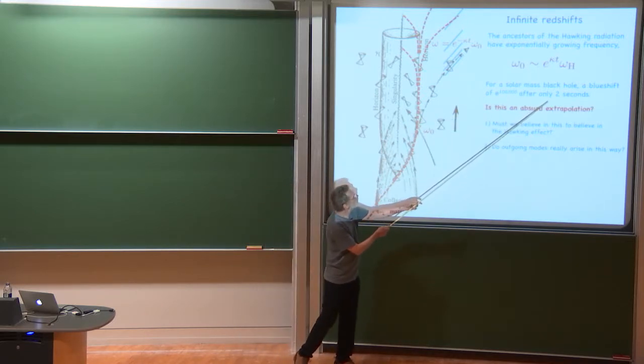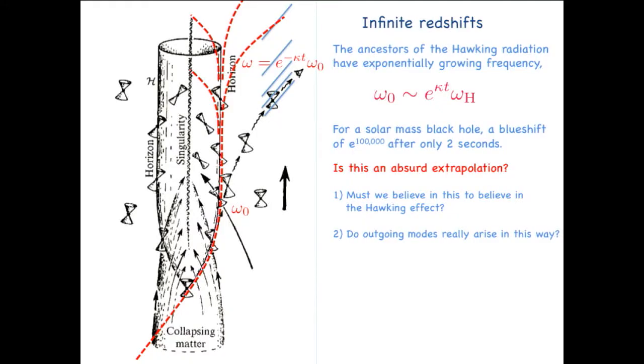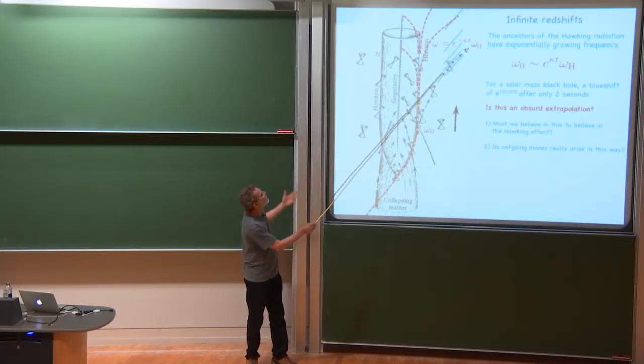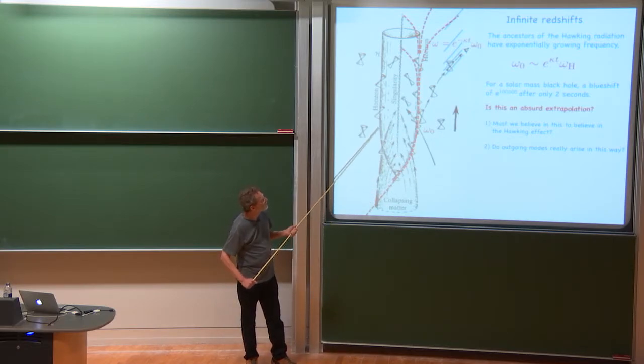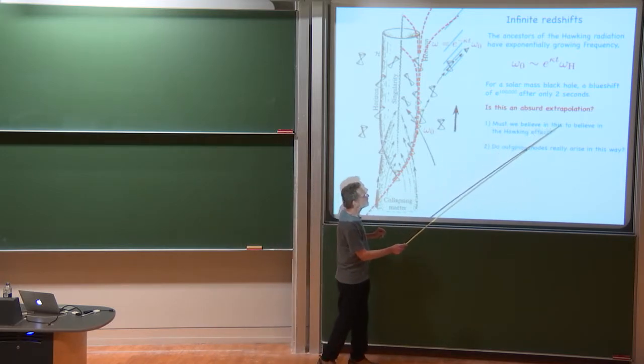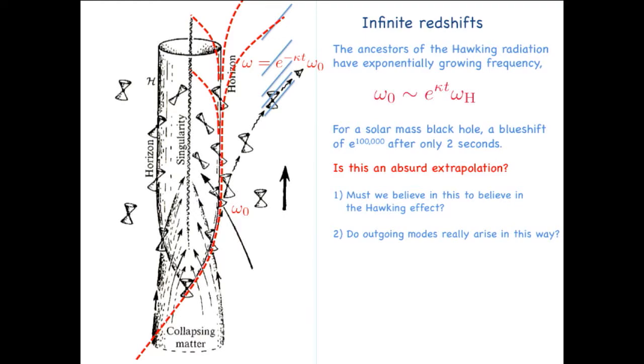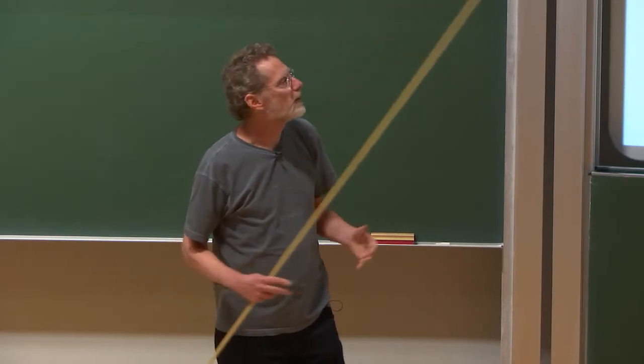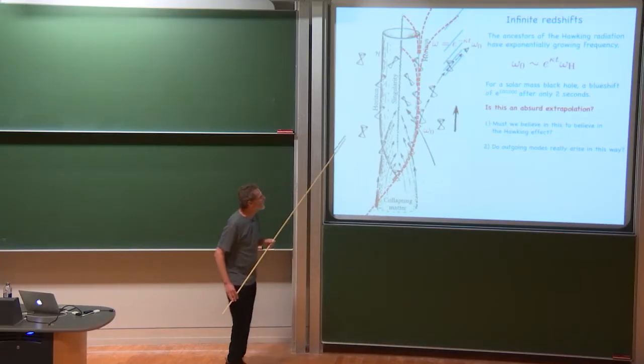And after only 2 seconds for a solar mass black hole, that's e to the 100,000. So what this is saying is that when we derive the Hawking effect in the way I sort of just waved my hands a moment ago, we're talking about evolution of the quantum vacuum from frequencies that are absurdly high to low frequencies like corresponding to 2 nanokelvin. So the question is, is this an absurd extrapolation? More importantly, must we believe in it to believe in the Hawking effect at all? And a second question is, is this really how outgoing modes emerge from a black hole? Do they really come from essentially infinitely blue-shifted progenitors?